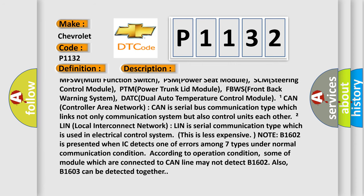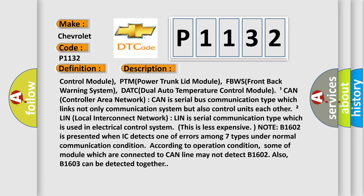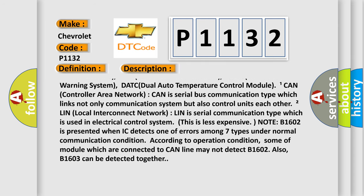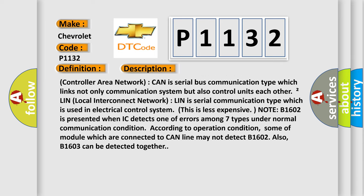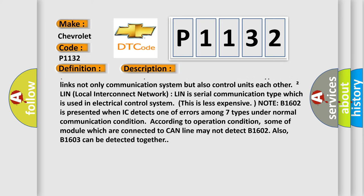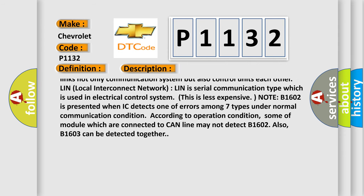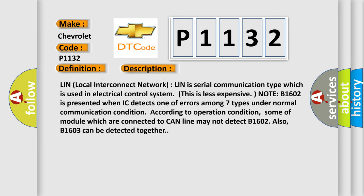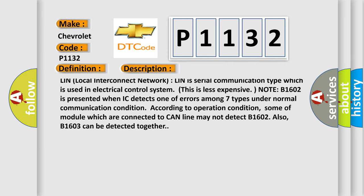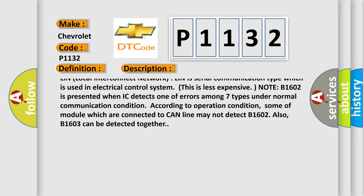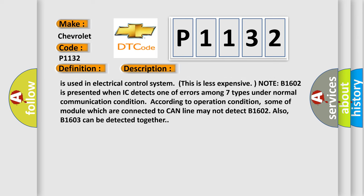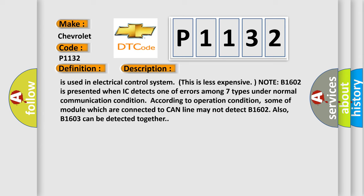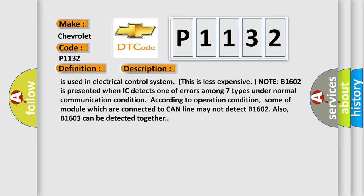DATC (dual auto temperature control module). CAN — Controller Area Network — is a serial bus communication type which links not only the communication system but also control units to each other. LIN — Local Interconnect Network — is a serial communication type used in electrical control systems and is less expensive. Note: B1602 is presented when the IC detects one of seven types of errors under normal communication condition. B1603 can also be detected together depending on operating conditions.